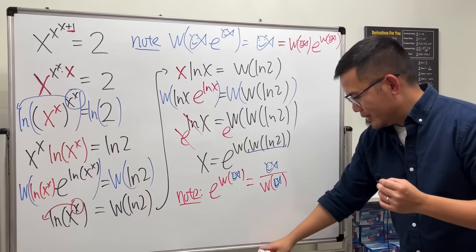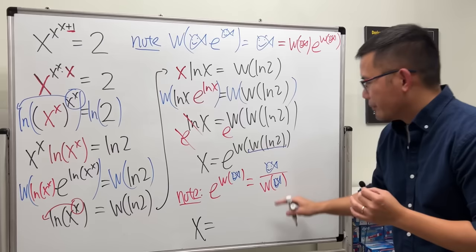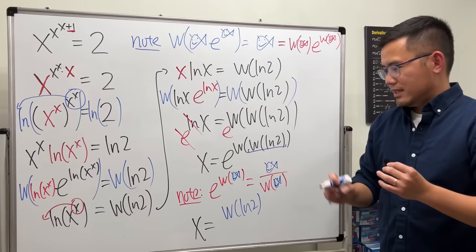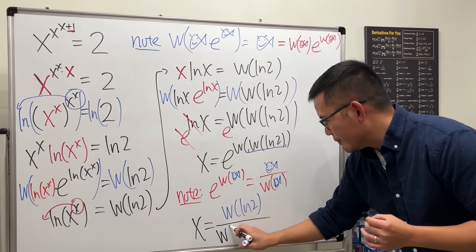x equals that blue part is the fish that goes to the top first. So, we have the Lambert W function of ln 2. Over, you see here on the bottom, we have one Lambert W function. So, go ahead and put that down. And then we have the fish, which is the Lambert W function of the Lambert W function of ln 2.